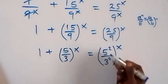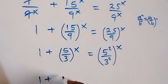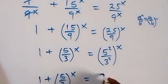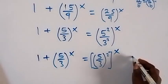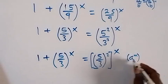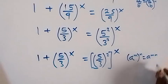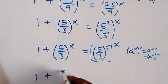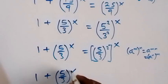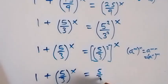From here, we can apply the same rule, and this will become 1 plus (5 over 3) raised to power x. Now, equals to, we have (5 over 3) raised to power 2, which is raised to power x. From the law of indices, (a raised to power m) raised to power n is the same as a raised to power mn, so we can interchange this power. This becomes 1 plus (5 over 3) raised to power x, then equals (5 over 3) raised to power x.